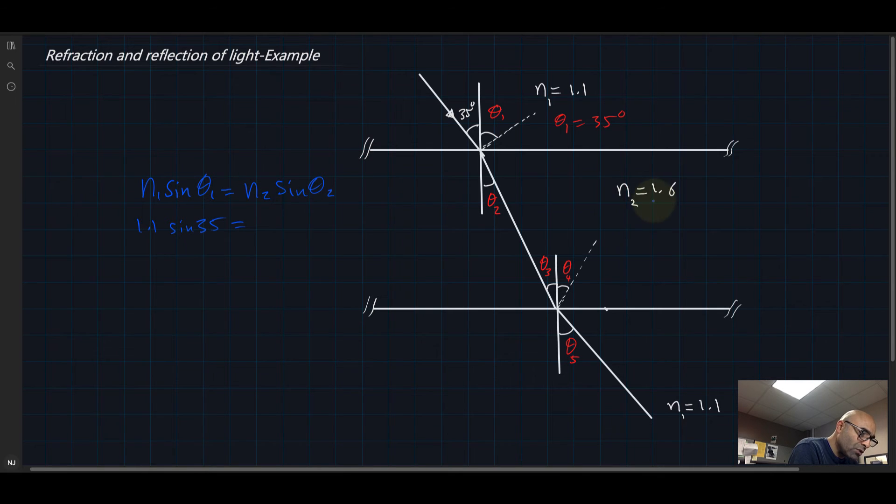After some calculations, you can get theta 2 is equal to 23.2 degrees. If this is 23.2 degrees, this should be 23.2 degrees because this is parallel light or parallel line.